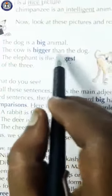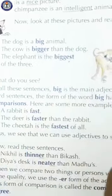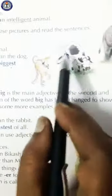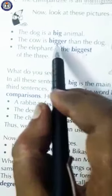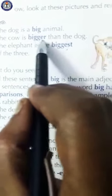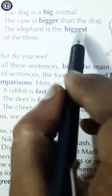The cow is bigger than the dog — there are two animals here, and the cow is bigger than the dog. After comparative degree we use 'than'. In most cases, comparative degree uses the suffix '-er'. And the third example: the elephant is the biggest of the three.